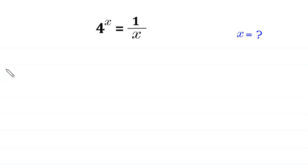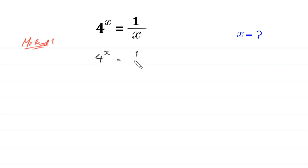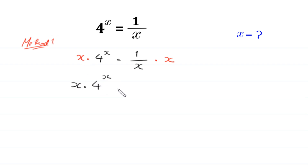We will solve it by two methods. Let's start with Method 1. In this method, we multiply both sides of this equation by x. So x times 4 to the power x is equal to 1, since the x on the right side cancels out.